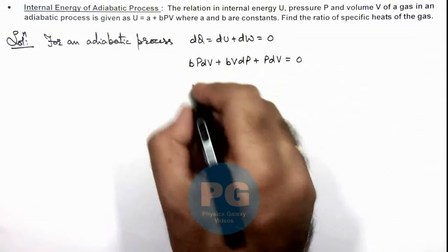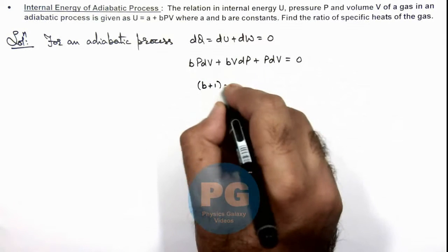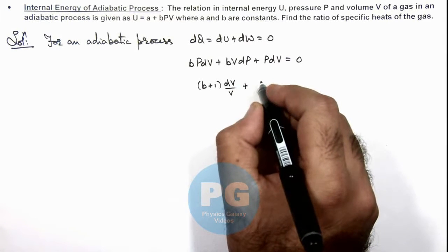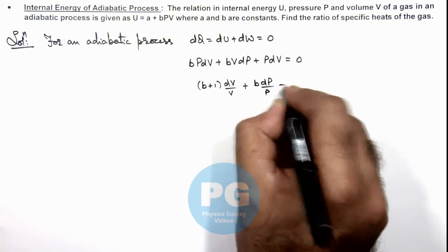And this on simplifying gives us (b + 1) times dV/V plus this gives us b times dP/P is equal to zero.